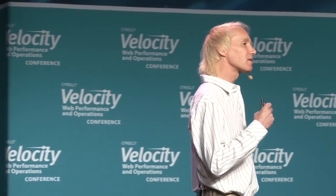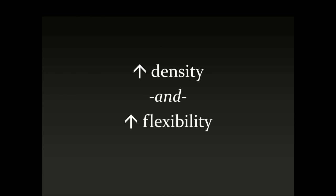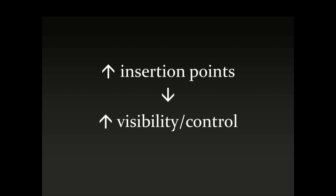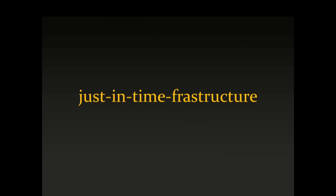Perhaps location doesn't really matter, or perhaps location is transformed from a constraint into a feature — location becomes the thing you choose. A time-sensitive workload gets placed somewhere expensive but fast; a cost-sensitive workload gets placed where it's always cheapest and you don't care when it's done. Think about scale now being measured in density, not just up or wide. This kind of scale gives you an increase in flexibility, a greater number of insertion points, which creates more opportunities for visibility and control — and by that, we can get what I call a just-in-time infrastructure. Thank you very much.